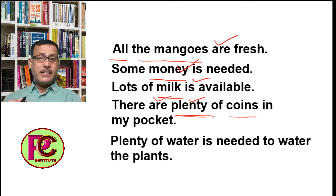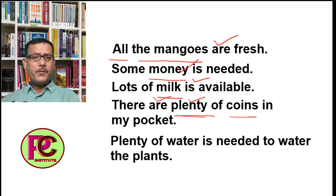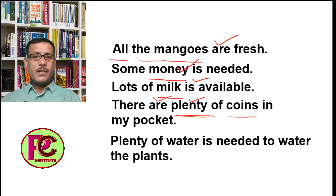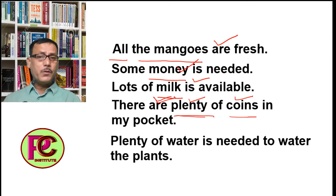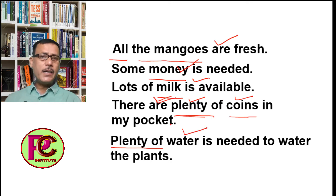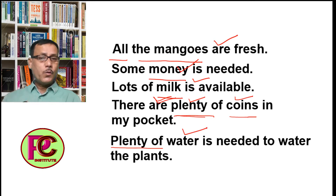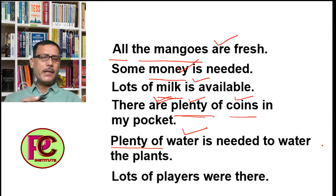'Plenty of water is needed to water the plants.' In the previous sentence we used 'plenty of coins' — there the noun was plural, so the verb was also plural. But here after 'plenty of', the noun 'water' has come — water is an uncountable noun which is always singular. So the verb that follows is also singular. 'Lots of players are...' — after 'lots of', the noun is plural, so the verb is also plural.